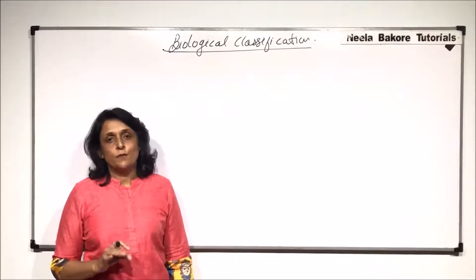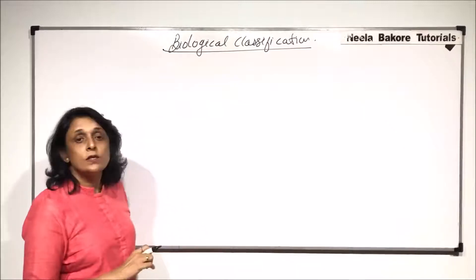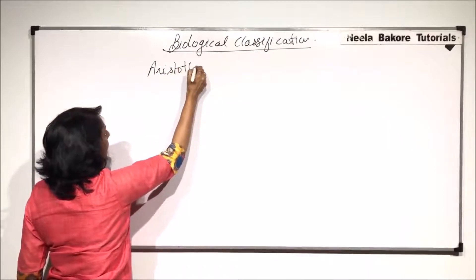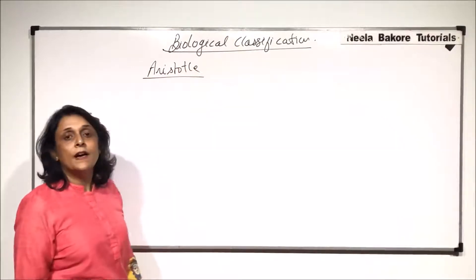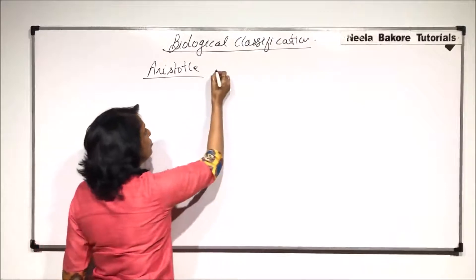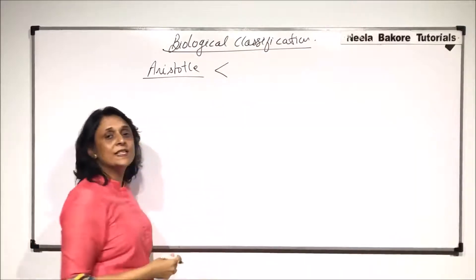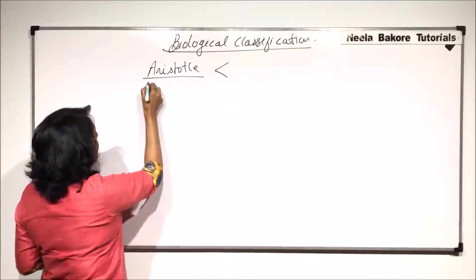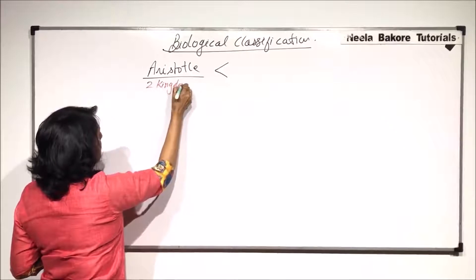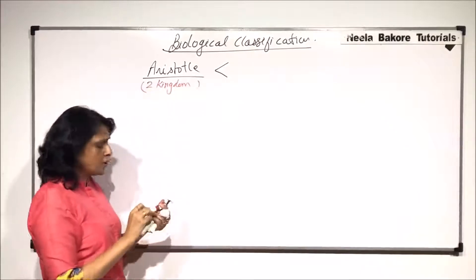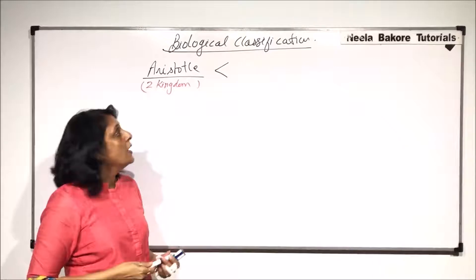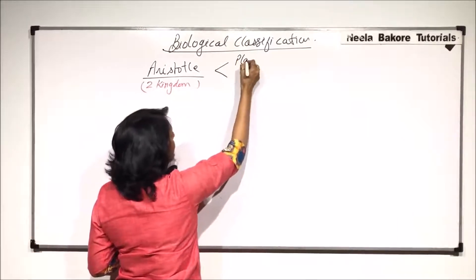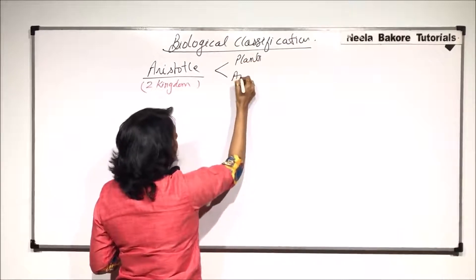The earliest classification which was put forth was by Aristotle. Aristotle classified all the living organisms into two categories. This is basically a two kingdom classification and one of the earliest ones which was put forth. He classified all organisms into only two categories: plants and animals.